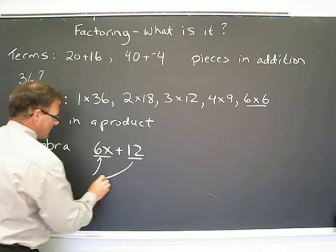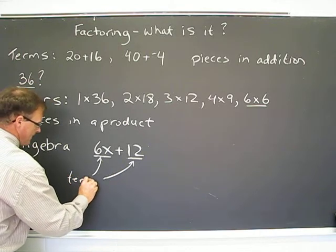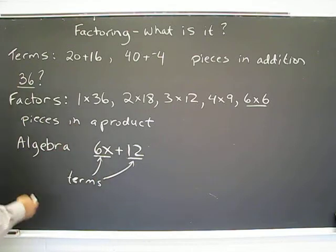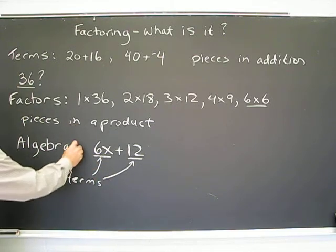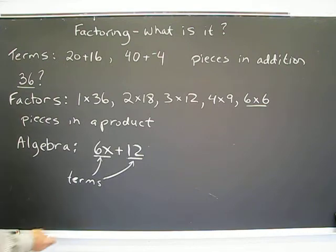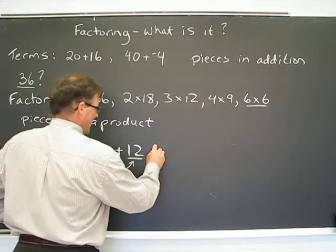So these guys are called terms. This is a binomial, two terms, bi meaning two added together. Well, when I want to turn this into a product, we call that factoring.